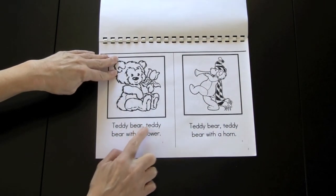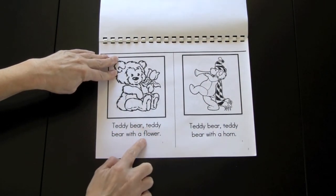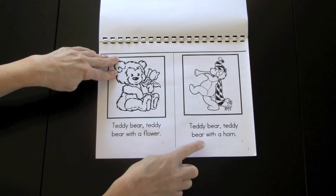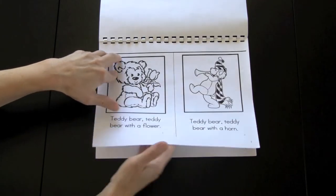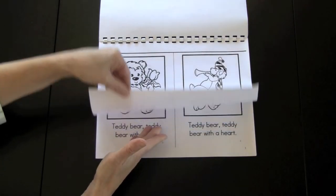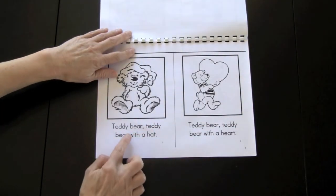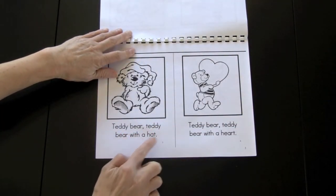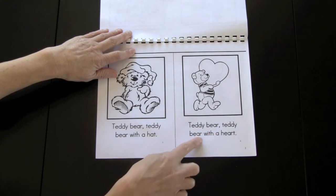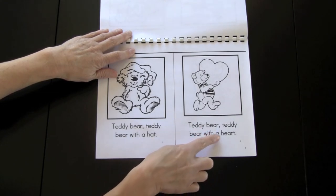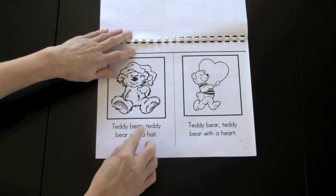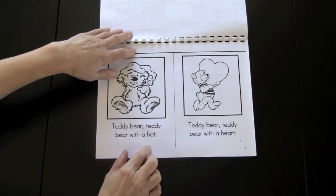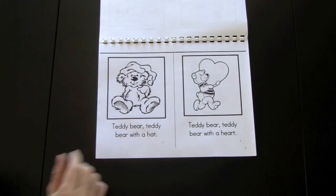Teddy bear, teddy bear with a flower. Teddy bear, teddy bear with a horn. Teddy bear, teddy bear with a hat. Teddy bear, teddy bear with a heart. Again, this introduces word patterning.